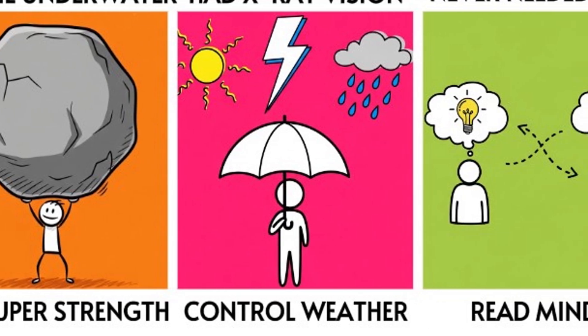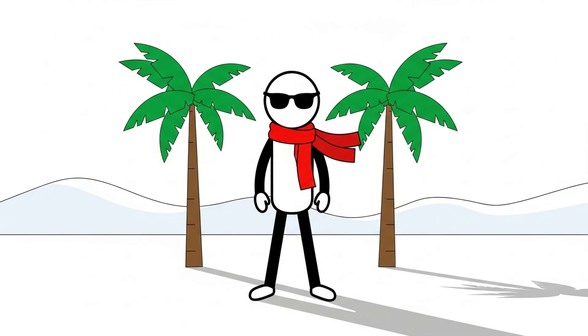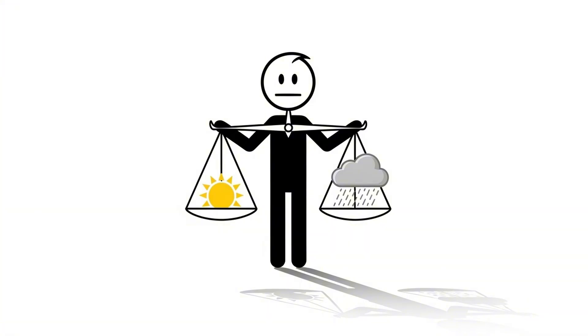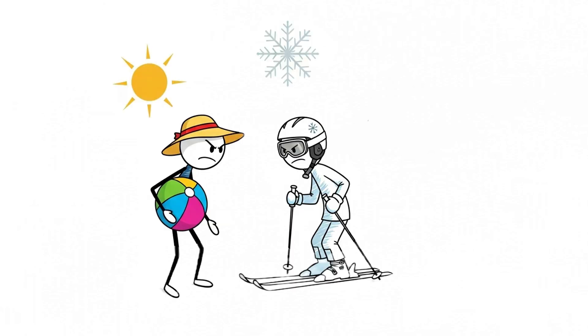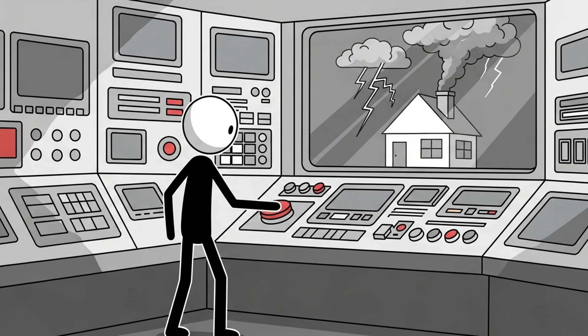What if humans could control the weather? Imagine waking up and deciding today will be sunny, and then it just happens. With weather control, every day could be your perfect day. Beach weather in January, snow in July. Farmers could summon gentle rains exactly when their crops need them. No more droughts, no more floods, just a perfectly balanced climate, in theory. But here's the problem. Everyone wants different weather. Cities might fight over who gets sunshine and who gets storms. Some people could weaponize the weather. Hurricanes on demand. Sports fans could clear skies for the big game while their rivals summoned sudden downpours.